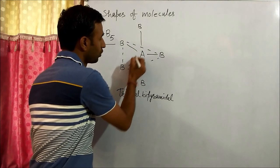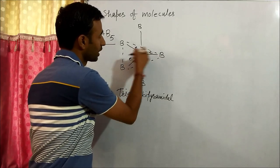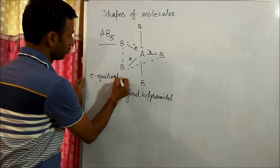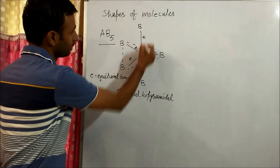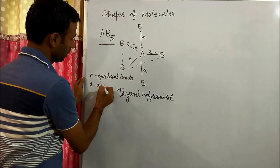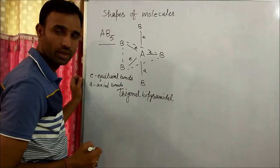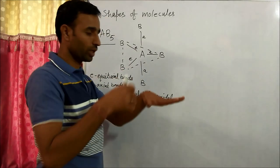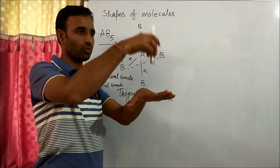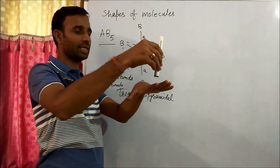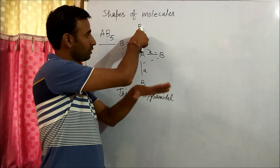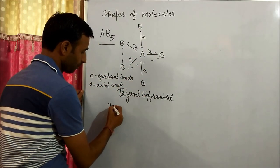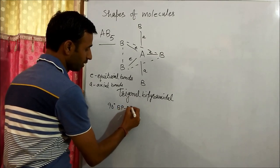The first type is the bonds in the trigonal plane — these are called equatorial bonds. The other two are called axial bonds. The axial bond forms a 90-degree angle with the three equatorial bonds, giving 90-degree bond pair–bond pair repulsion.